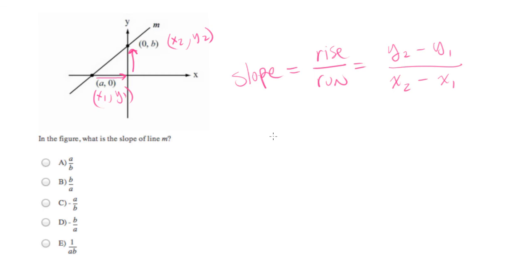Now we just have to plug in. So y2 is, in our case, is b. y1 is 0. x2 is 0. And x1 is a.